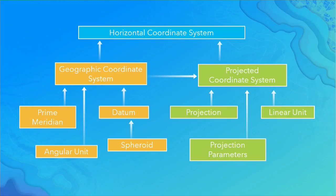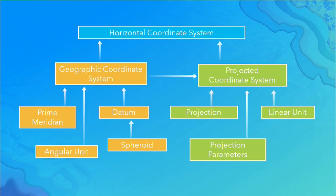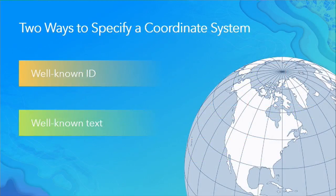In a projected coordinate system, it is always based on a particular geographic coordinate system, and then it contains a projection — the mathematical algorithm used to convert between degrees and XY values. Each algorithm has its particular parameters, which differ across projections. Then we have a linear unit: meters, yards, feet, etc.